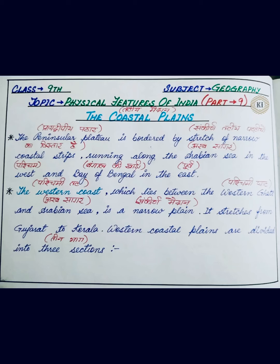Let us begin our chapter. The first point is that the Peninsular Plateau is bordered by a stretch of narrow coastal strips running along the Arabian Sea in the west and Bay of Bengal in the east. This is bordered by a stretch of narrow coastal strips — sankeen yani narrow, tatiye yani coastal, pattyon yani strips — and stretch yani its extent. So the border of the Peninsular Plateau is this narrow line of coastal strips.